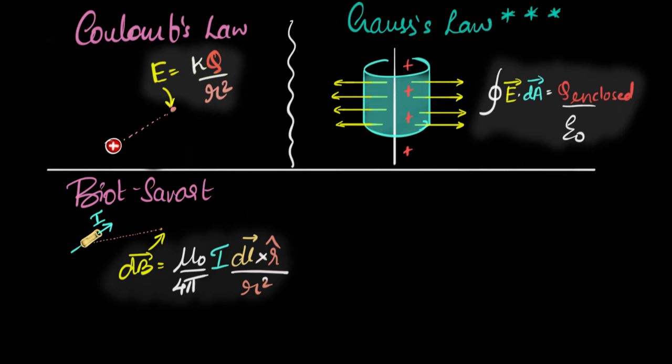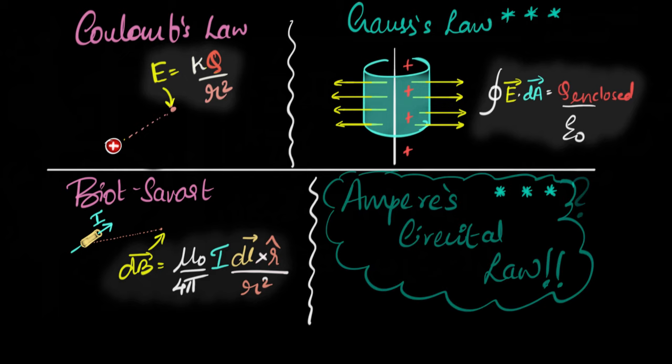And so now the question is, do we have something similar in magnetism? Something that can help us calculate magnetic fields for symmetric situations? The answer is yes. We have something called Ampere's Circuital Law.